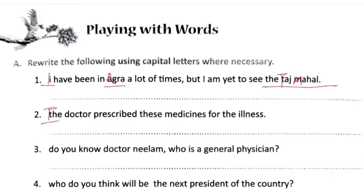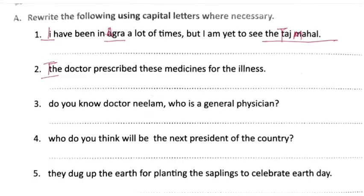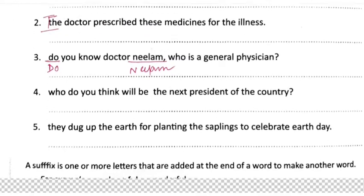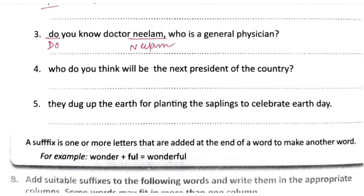Next: 'The doctor prescribed this medicine for the illness.' The sentence starts with a small letter, which is wrong, so it should be T capital. 'Do you know Dr. Neelam who is a general physician?' — D should be capital, and Dr. Neelam: N should be capital.